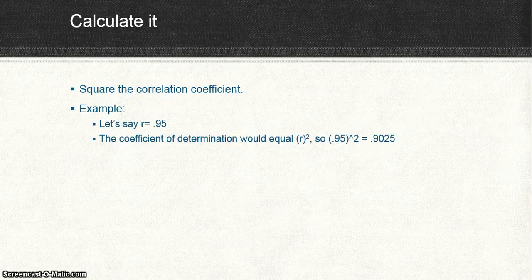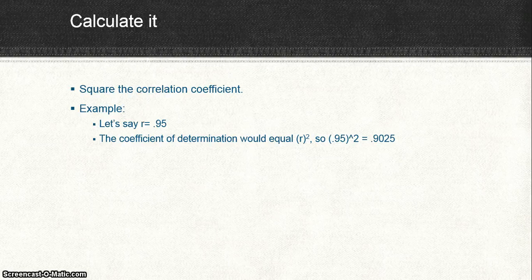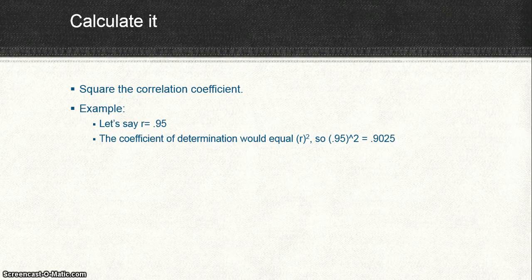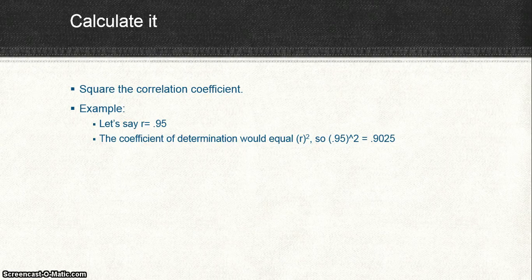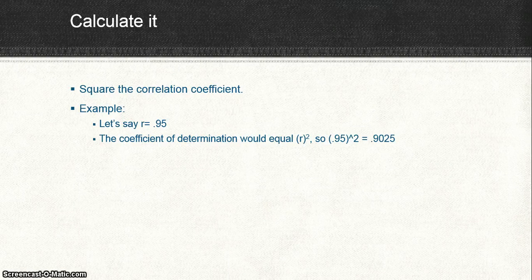Alright, so it is called r squared for a reason. It is literally squaring the correlation coefficient, which I've covered in a previous video, and if you want to take a look at that, go ahead and click on the link below. But aside from that, let's just talk about how to calculate the coefficient of determination.